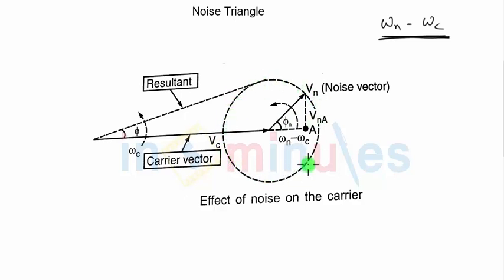So in this particular case, you can see the resultant will be nothing but this particular vector here. Because I can also draw the same noise vector VN here, because this red color vector that I have drawn has the same amplitude as VN which we have shown here, because both represent the radius of this particular circle.